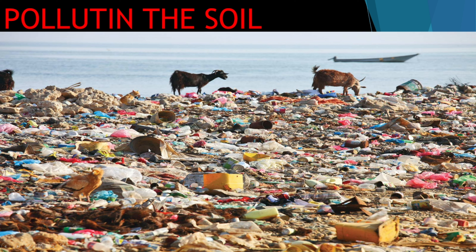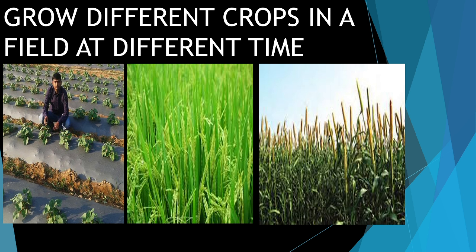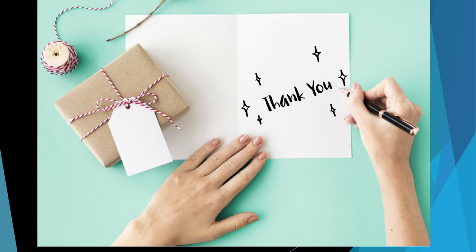Garbage consisting of plastic, rubber, glass, and metal pollutes the land and harms the quality of soil. We should not throw these waste materials on the land. Also, we should grow different kinds of crops in a field at different times — this helps in reducing the loss of nutrients from the soil. You should not plant the same crop all the time; keep changing different types of crops at different times so that it helps the soil retain its nutrients.